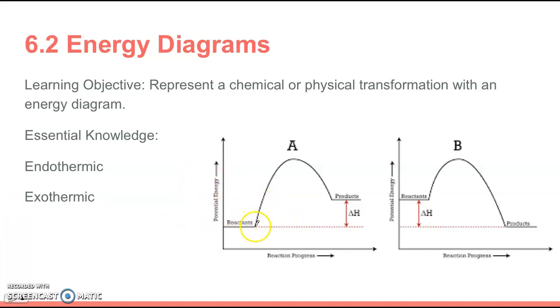For thermodynamics, you're only looking at the potential energy level of the reactants and the potential energy level of the products, and what's the difference between them. Thermodynamics doesn't deal with this activation energy barrier, that's more kinetics from unit 5. You look at where did you start, where did you end, and what's the difference?